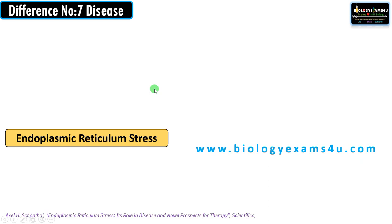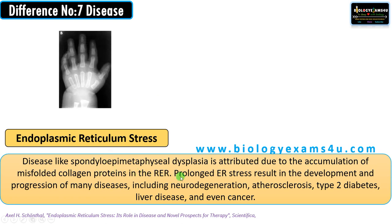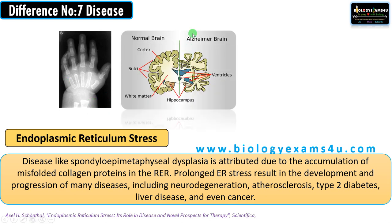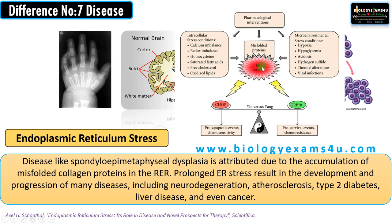Difference number seven regards diseases associated with endoplasmic reticulum stress. Spondyloepimetaphyseal dysplasia is due to the accumulation of misfolded collagen proteins in the rough endoplasmic reticulum — a genetic disorder leading to abnormal bones primarily due to malfunctioning of RER. Prolonged ER stress is associated with diseases like Alzheimer's and neurodegeneration, atherosclerosis, type 2 diabetes, and the progression of cancer. ER stress leads to misfolded proteins, intracellular stress conditions, hypoxia, acidosis, and hydrogen sulfide production, all leading to various diseases.